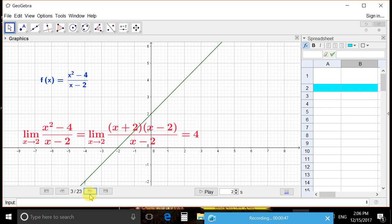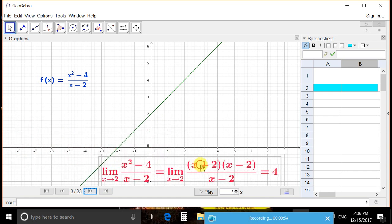Therefore, when lim(x→2), the function f(x) goes to 4. This is how we have proved it algebraically.